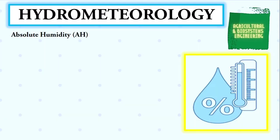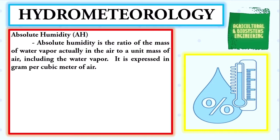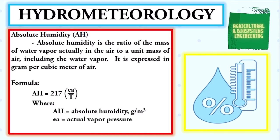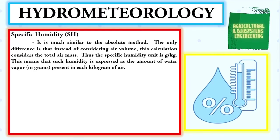Before we solve for each value, I would like to give a brief definition on each of the humidity measurements. We begin with absolute humidity, represented by AH. It is the ratio of the mass of water vapor actually in the air to a unit mass of air including the water vapor, expressed in grams per cubic meter. The formula is: AH = 217 × ea / T, where ea is the actual vapor pressure and T is the absolute temperature in Kelvin.